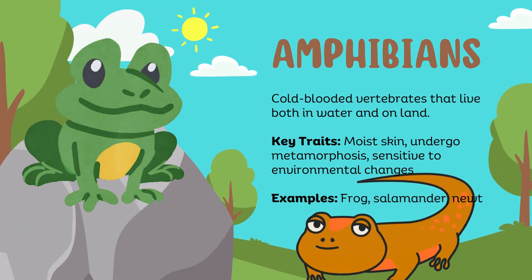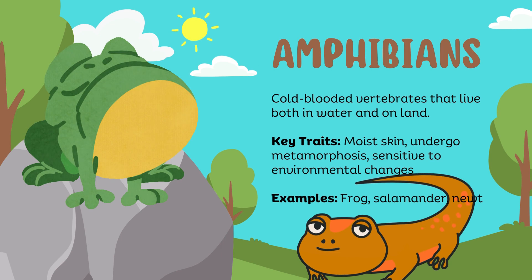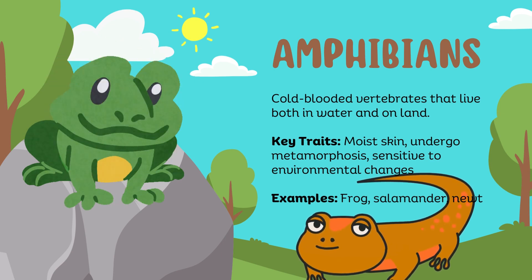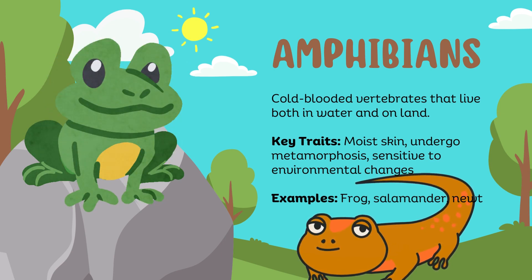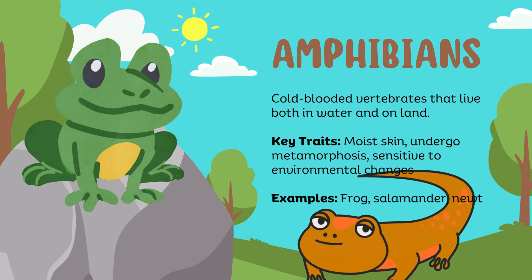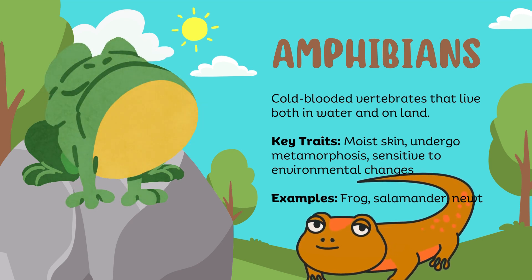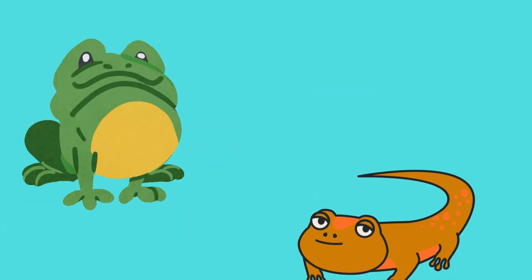Amphibians: cold-blooded vertebrates that live both in water and on land. Key traits: moist skin, undergo metamorphosis, sensitive to environmental changes. Examples: frog, salamander, newt.